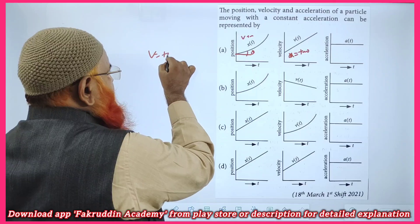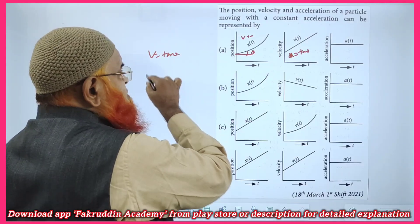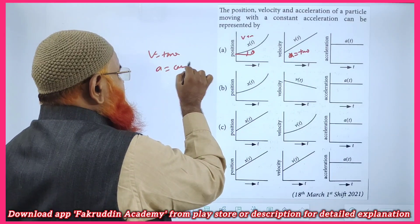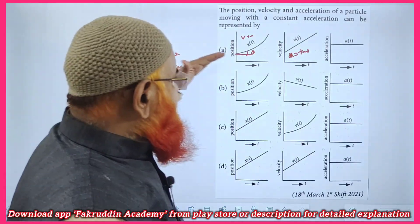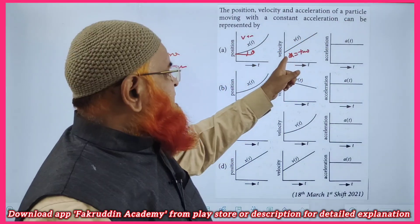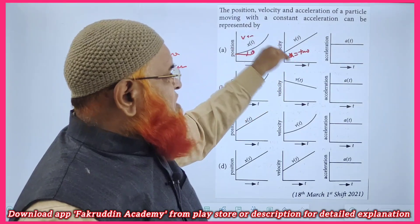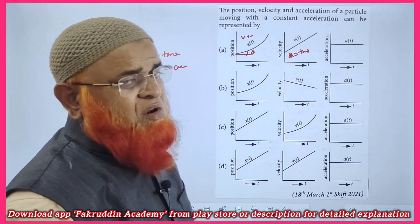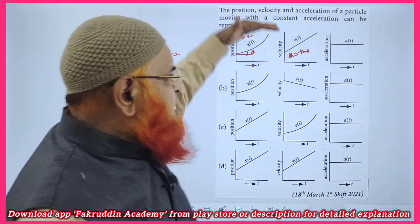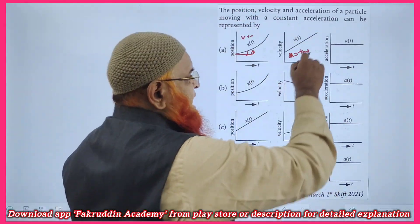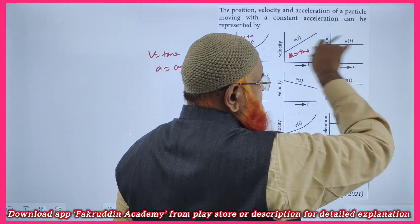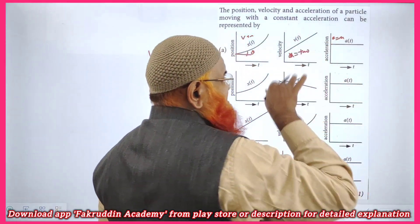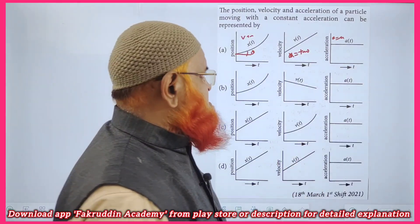Since V equals tan theta and theta is increasing, velocity is increasing along the parabolic path — confirming constant acceleration — uniform acceleration. In the velocity-time graph, slope gives acceleration: theta is constant, so acceleration is constant. In the acceleration-time graph it is a straight line, confirming constant acceleration. So all three graphs are consistent with uniform acceleration.